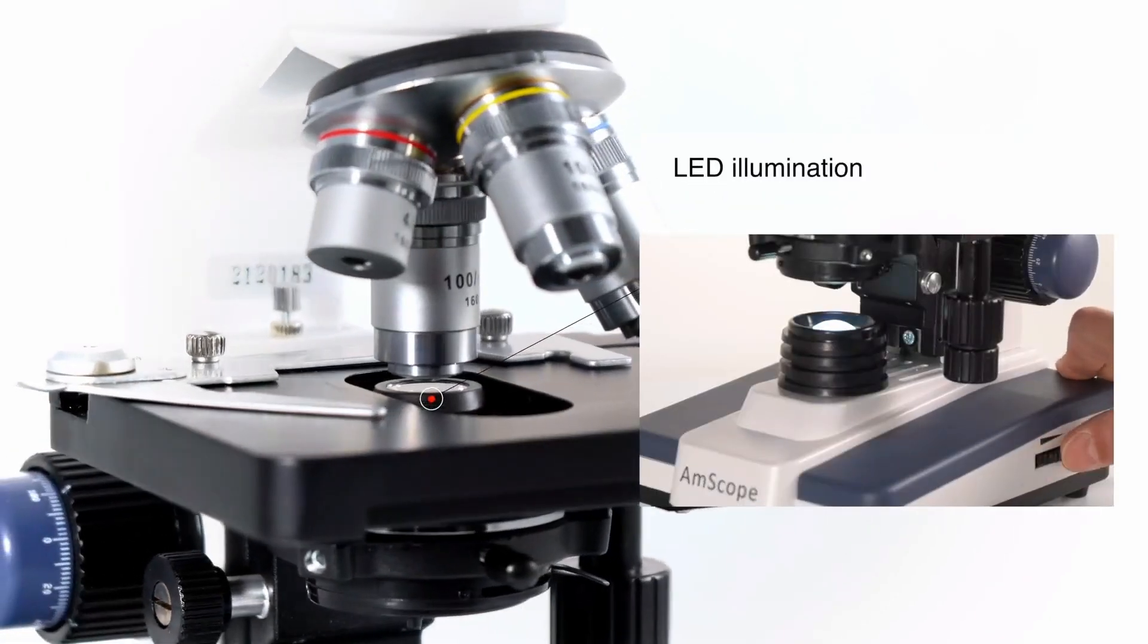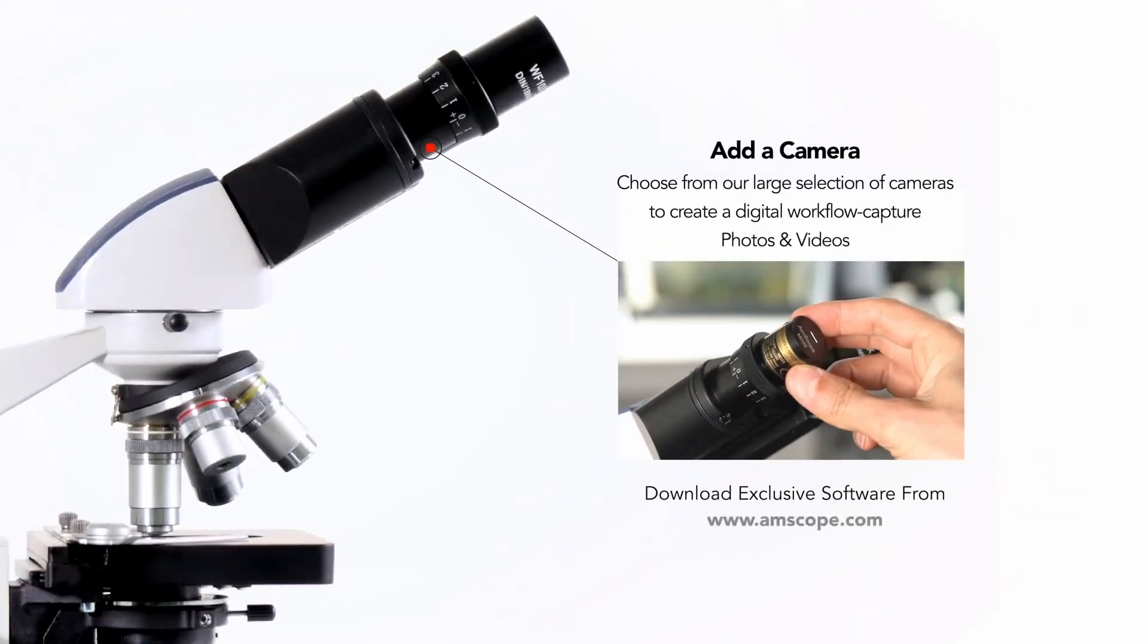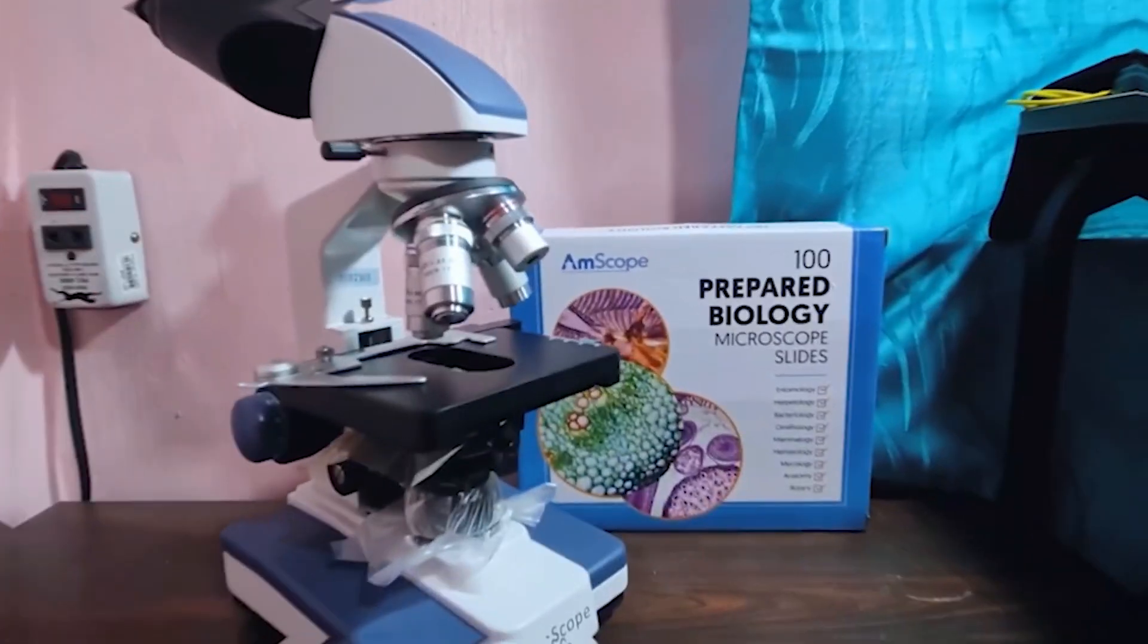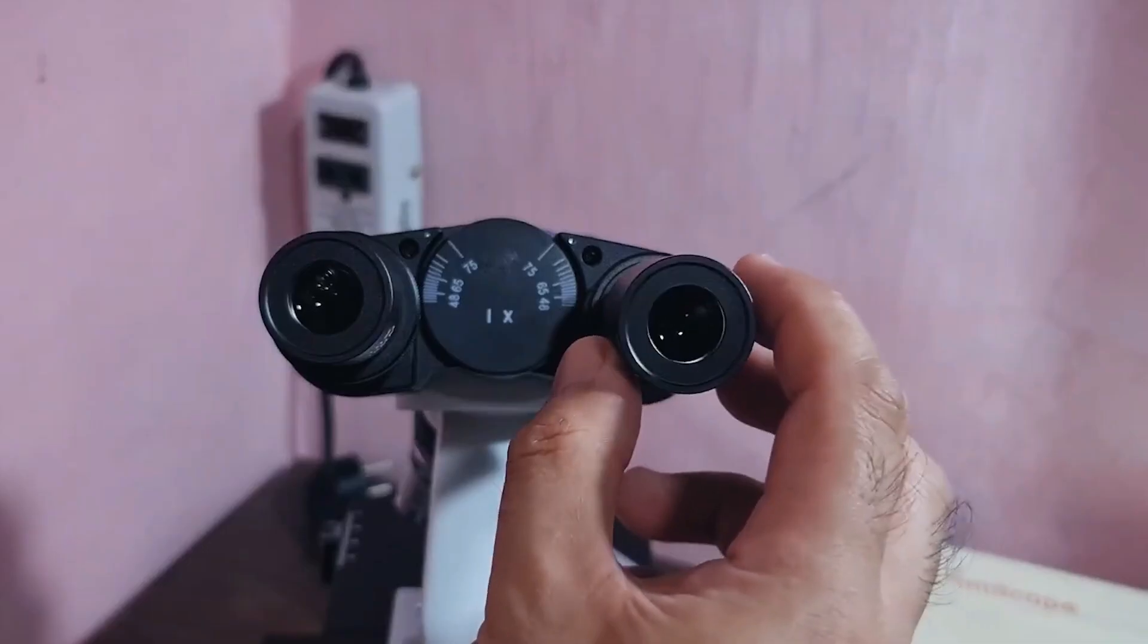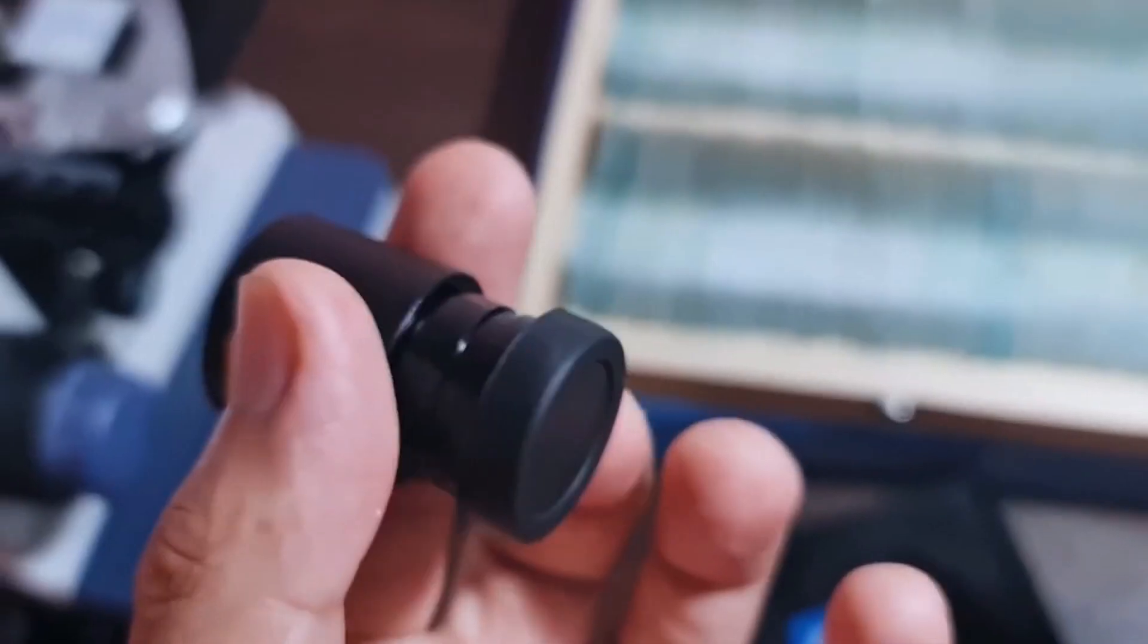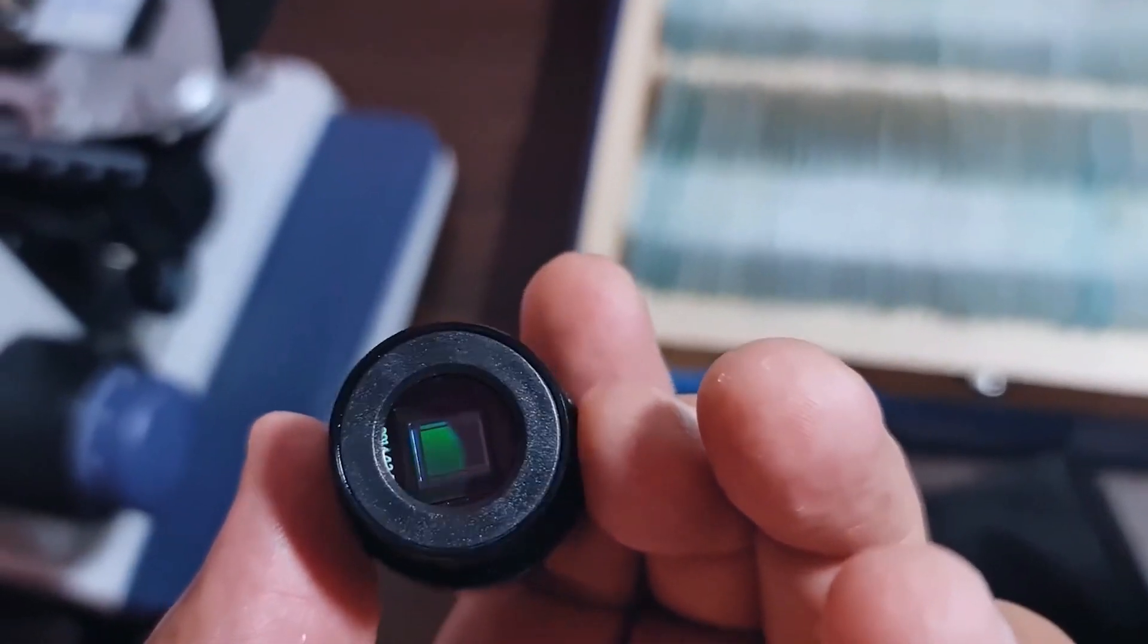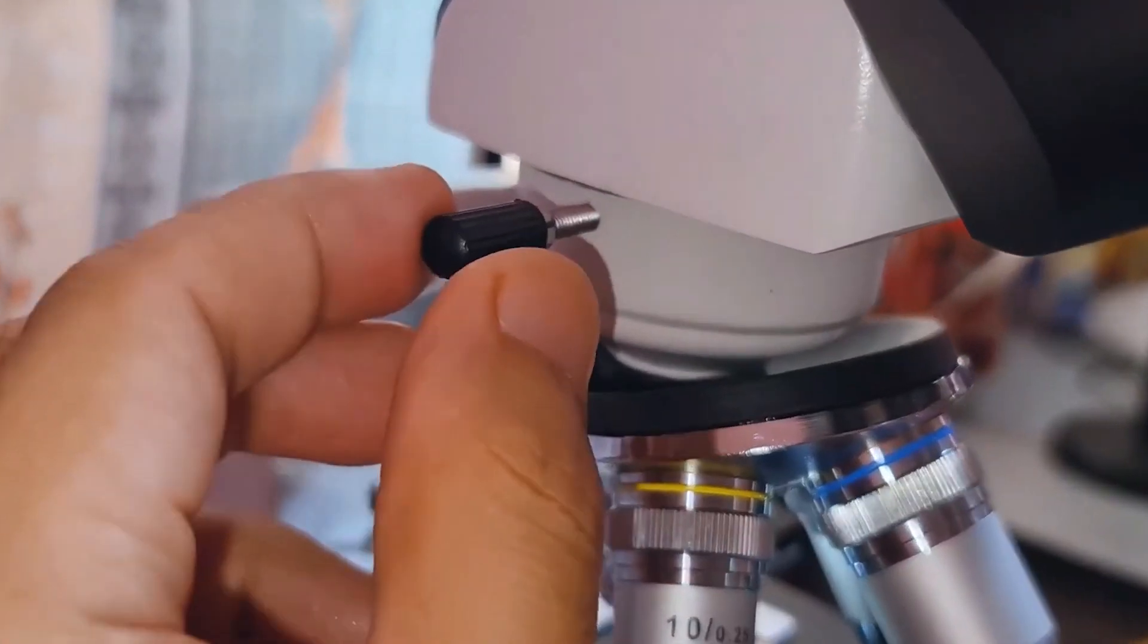One of the best aspects of this design is the adjustable interpupillary distance, ranging from 53 to 77mm. This means you can customize the fit to suit your eyes, ensuring comfort during those long sessions of exploration. Plus, the fixed 30 degree vertical inclination of the eyepieces significantly reduces eye and neck strain, allowing you to focus more on your samples and less on discomfort. The 360 degree rotation capability of the head adds to the convenience, enabling you to share your findings with others easily while providing a comprehensive view.